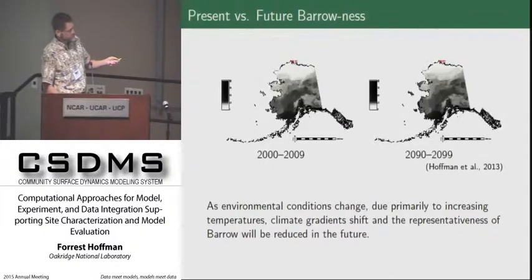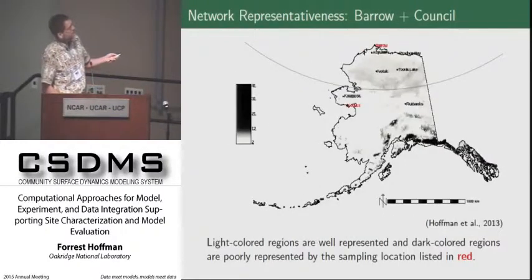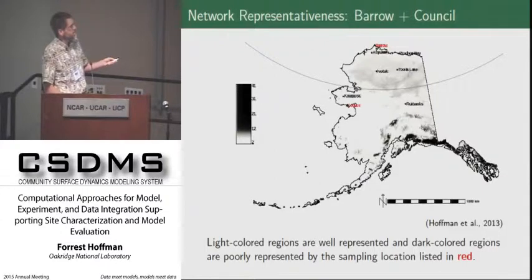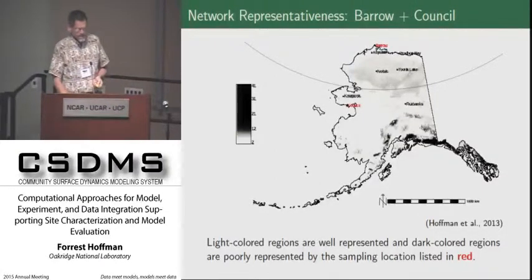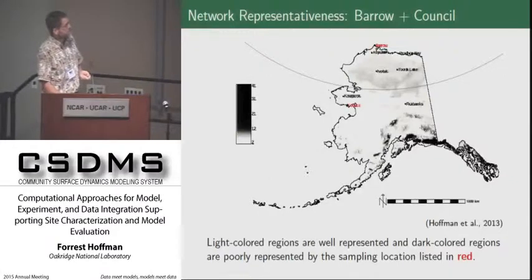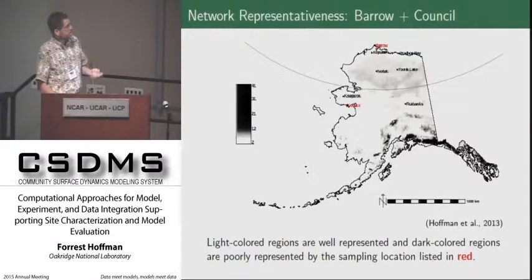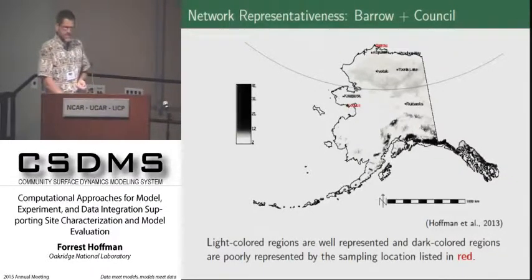We can also look at present and future representativeness. We can add another site, and now we've got much better coverage — much better representation of the full environmental space spanned across the state of Alaska by picking these two locations. In fact, for phase two of the project, NGEE Arctic is proposing to move much of their work down to the Seward Peninsula to look at watershed behavior there as a sort of space-for-time trade as a result of this analysis.